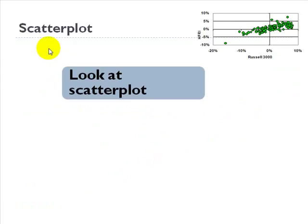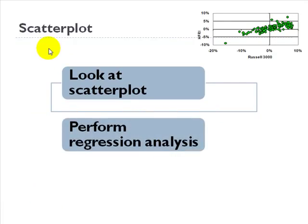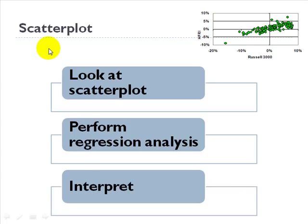First, we look at the scatter plot. Second, we perform the regression analysis, which generates estimates of population parameters. Third, we interpret that analysis.